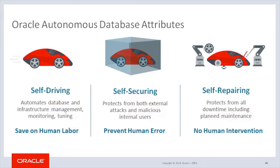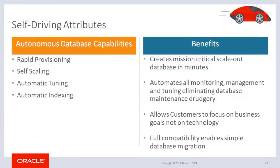That's less than 30 minutes downtime per year, including planned maintenance. It will also elastically scale compute or storage. The Autonomous Database self-driving capabilities include rapid provisioning, self-scaling, automatic tuning, and automatic indexing. Together these capabilities provide the ability to provision a database in minutes with automated management, monitoring, and tuning. It provides the time for you to focus on innovation instead of daily mundane tasks. Let's take a look at the capabilities in greater detail.